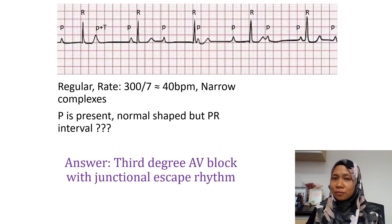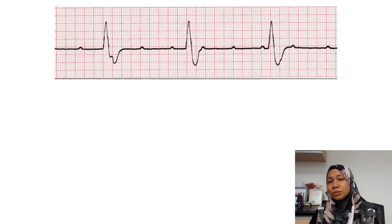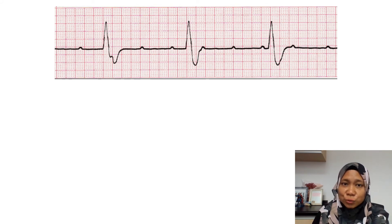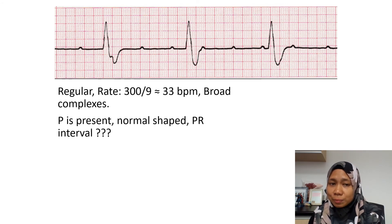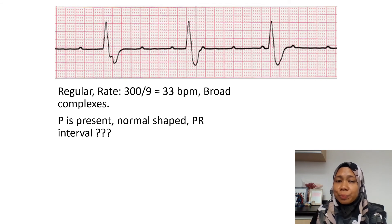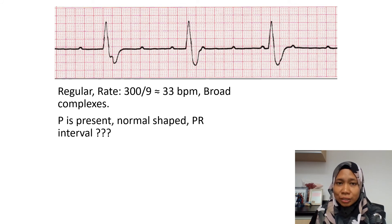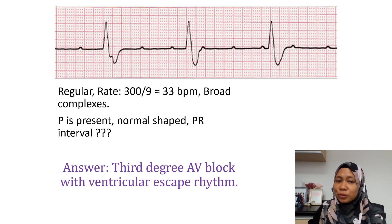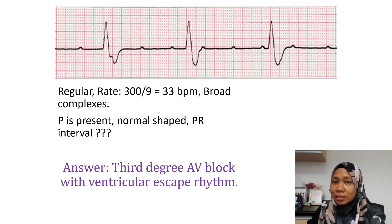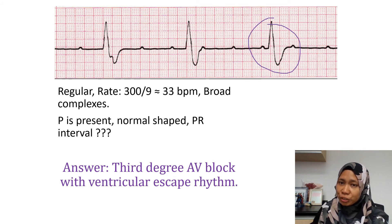So this is also a similar ECG in which we can see a regular rhythm, which is broad complex and very bradycardic — the rate is about 33 beats per minute. The P wave is present and normal in shape, but there is dissociation between the P and the QRS complex. So this is also a third degree AV block. But the perfusing rhythm is the ventricular escape rhythm, because the QRS complex is broad — so this is a ventricular rhythm.